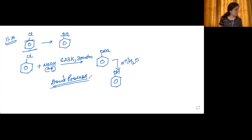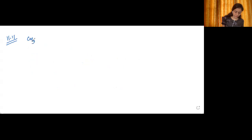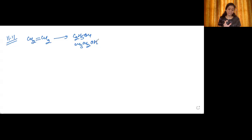Let's now move into question number 11. Question 11.11 asks for the mechanism of hydration of ethene to yield ethanol. We need to convert ethene into ethanol. If you see this reaction carefully, it is an electrophilic addition reaction — water is getting added to the ethene molecule.